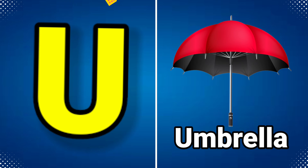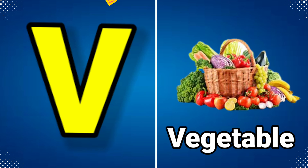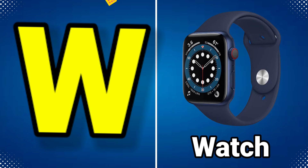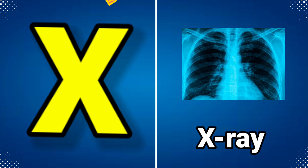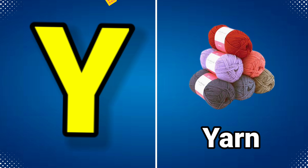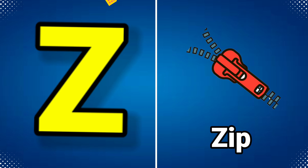U for umbrella, V for vegetable, W for watch, X for x-ray, Y for yarn, Z for jeep.